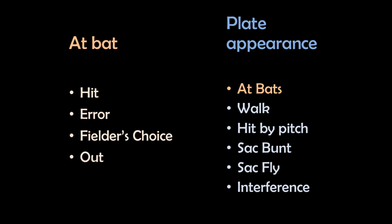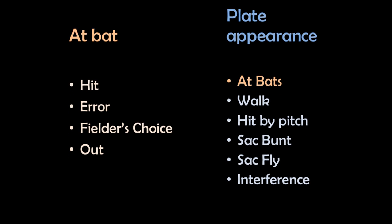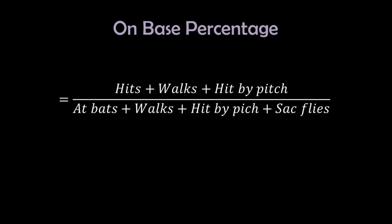Our other stat, on-base percentage, doesn't technically use plate appearances but it gets close. For on-base percentage, we add the number of hits, walks, and times hit by a pitch, and then divide them by the sum of at-bats, walks, times hit by pitch, and sacrifice flies. Sacrifice bunts are not included because generally they are pre-planned, whereas when a hitter gets a sacrifice fly, he's still likely trying to get a hit.